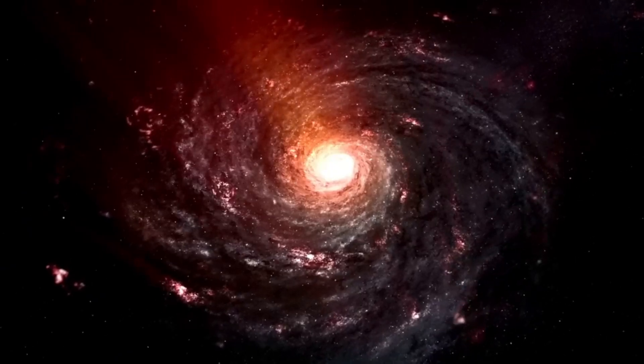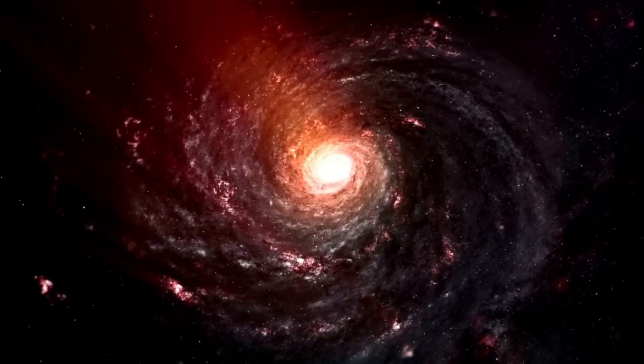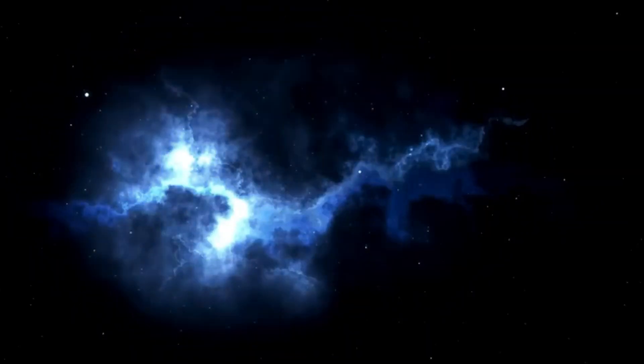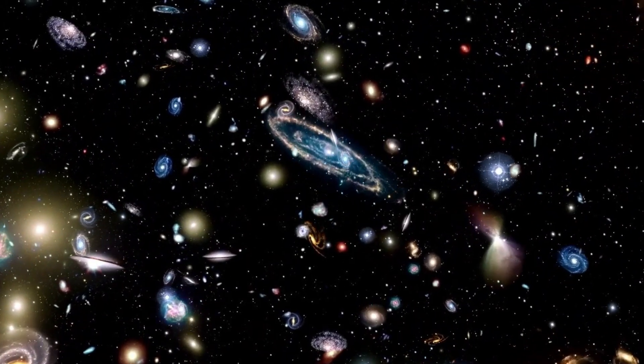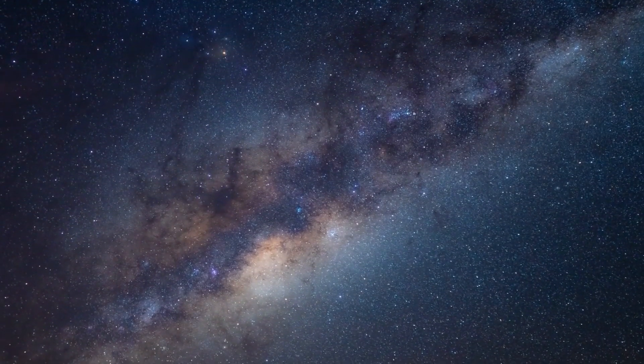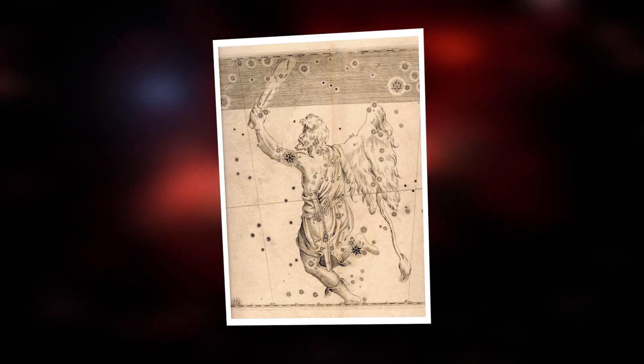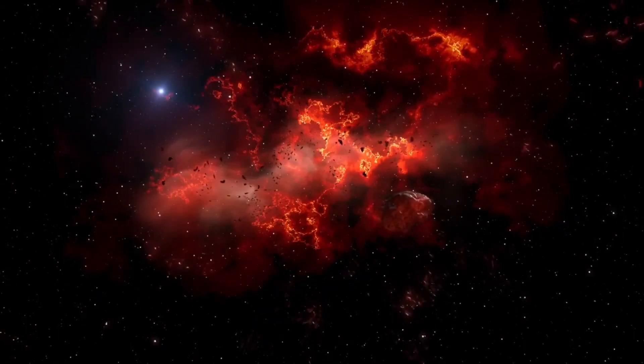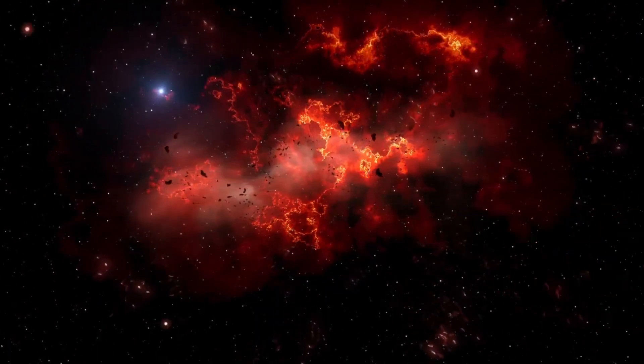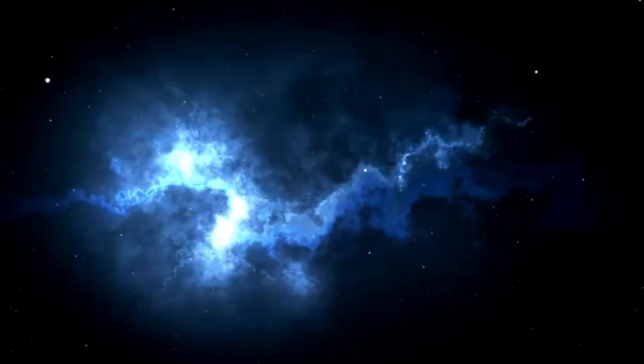What would happen if Betelgeuse went supernova? The idea of a supernova appearing in Earth's sky has captivated people's imaginations. New simulations help astronomers understand what we might see when Betelgeuse eventually explodes, expected within the next 100,000 years. Though uncertainty remains, Betelgeuse is about 500 light-years away, and recent research suggests a significant star must be within roughly 150 light-years to cause noticeable effects.